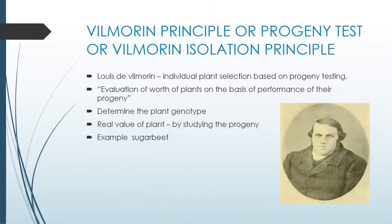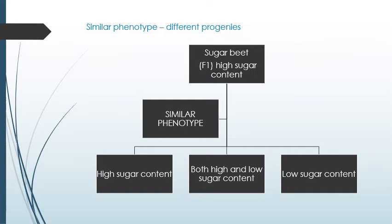Wilmore's principle of progeny test, or Wilmore isolation principle: Wilmore suggested that by testing an individual plant's progeny, we could identify the genotype, breeding value, and real value of the parent. That is individual plant selection based on progeny testing. Progeny testing is the evaluation of the worth of the plant on the basis of the performance of their progeny — that is, if you see a child's behavior, we could say how their parents would be. He used the example of similar phenotype in F1 with different progenies.